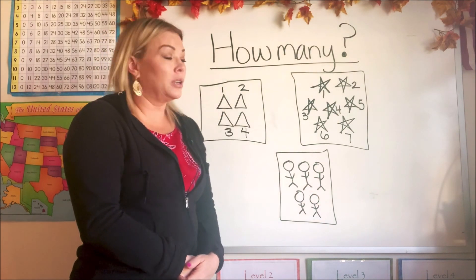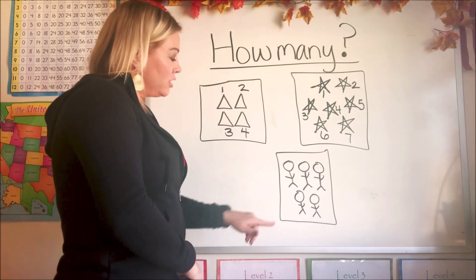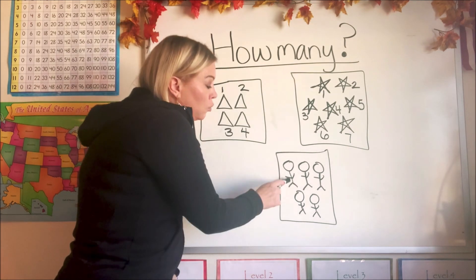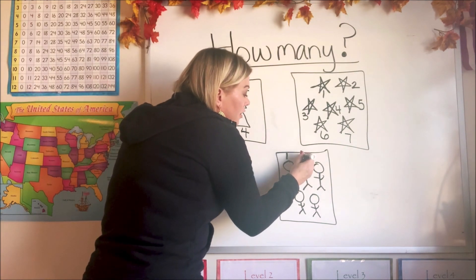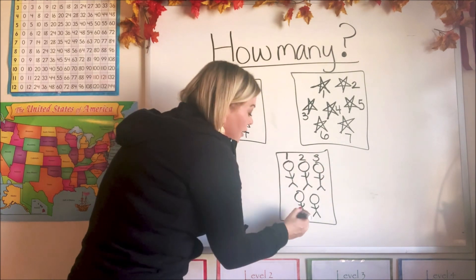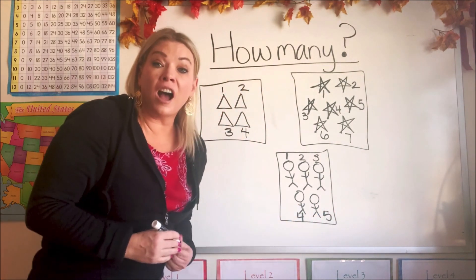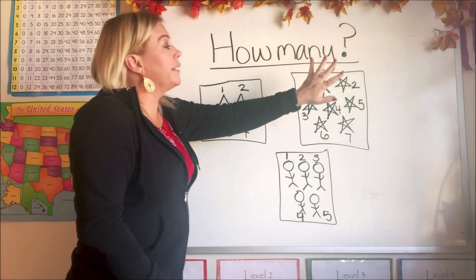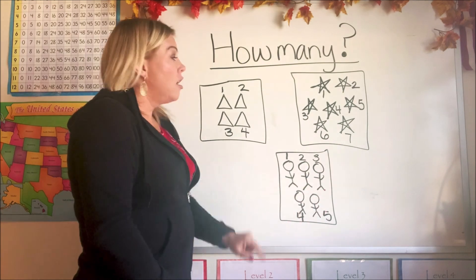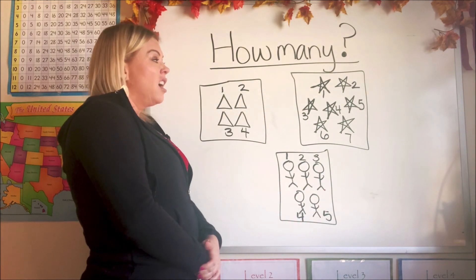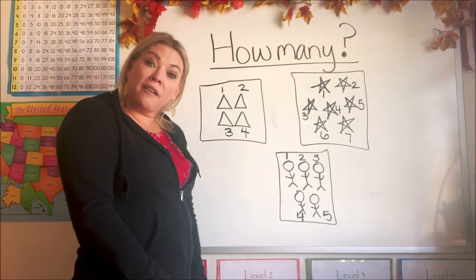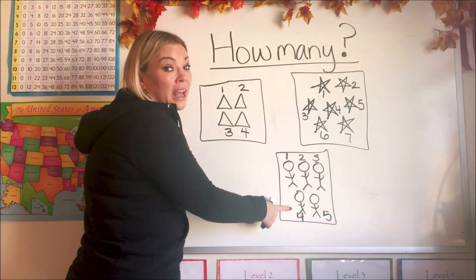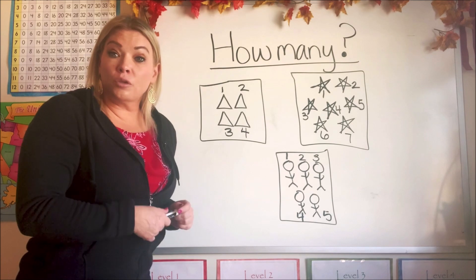What is in this last group, you guys? I tried to draw little people. Can you see those people? Let's count how many people are in this last group. There's one, two, three, four, and five. There are five people in this group. So we had a group of triangles, a group of stars, and a group of people. Not only do they have different objects in them, but they have different amounts. This one only had four items, this one had seven items, and this one had five items. So they're all different groups or sets.